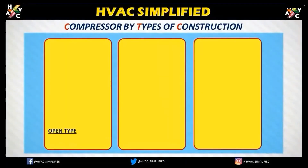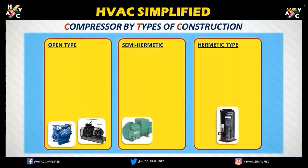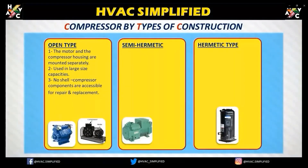Now let us see the types of compressor construction. There are three types: open type, semi-hermetic type, and hermetic type. In an open type compressor, the motor and the compressor housing are mounted separately, used in large size capacities. The compressor components are accessible for repair and replacement.